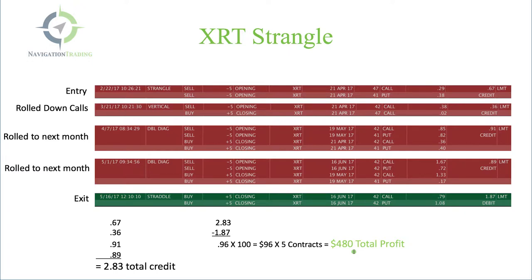That shows you how to calculate it. The other takeaway here is that you've got to stay mechanical. When you need to adjust, make the adjustments. If you don't need to adjust, don't make any adjustments. Just stay mechanical, and this is what can happen over time. Your credits accumulate and continue to stack up. When you buy it back, you're going to end up with some profit. We initially took in a $0.67 credit and we ended up with a $0.96 profit — over 100% of max profit on the trade just by rolling. We could have taken the trade off at a couple of other points for a break even or a small profit, but by just rolling and adjusting and collecting more credit, giving yourself more time to be right on the trade, we ended up with a nice $480 profit.